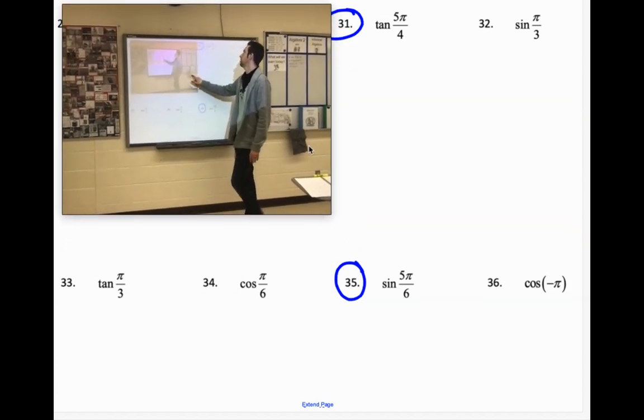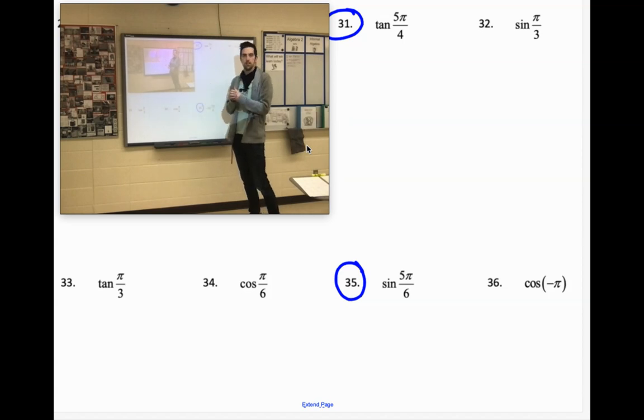Tangent of 5 pi over 4. Let's do this. Let's figure out what that is in degrees.